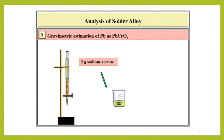At this stage, a buffer solution of sodium acetate and acetic acid is formed. At this pH, only lead is precipitated as lead chromate on adding K2CrO4. Other cations, even if present, do not precipitate. Heat the solution to boiling.